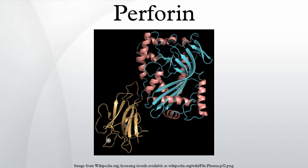Perforin has structural and functional similarities to complement component 9. Like C9, this protein creates transmembrane tubules and is capable of lysing non-specifically a variety of target cells.